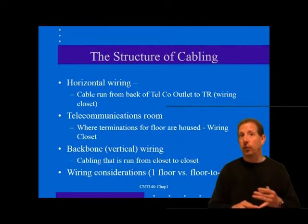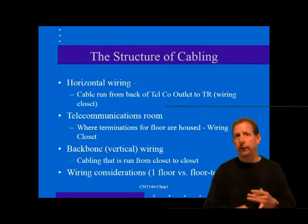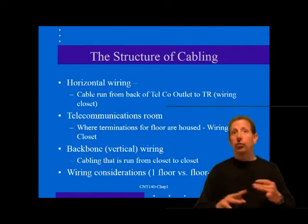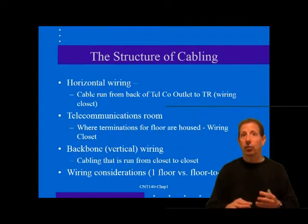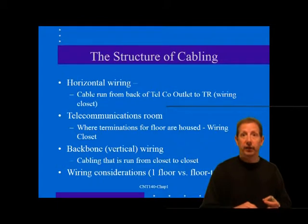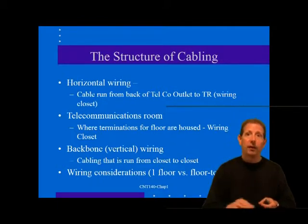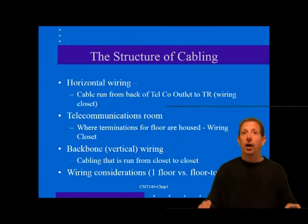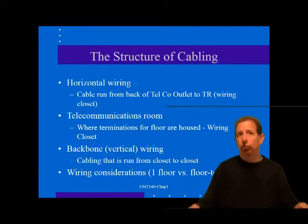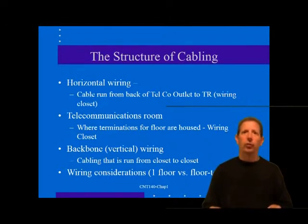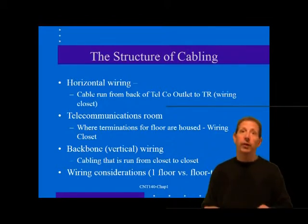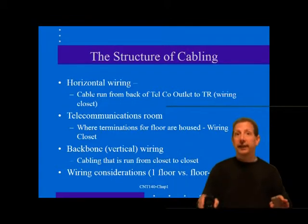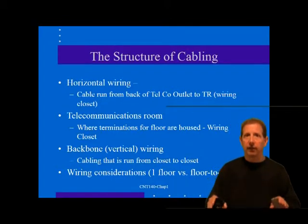Station wire from the wire center to the workstation is called horizontal wiring — a logical name since most of the wire runs horizontally across a single floor, typically in ceiling tiles with small vertical drops down the wall to the outlet. The TR-to-TR cable is called backbone wiring, since it forms a unifying structure between TRs. A very large floor may have more than one TR to adhere to station wire maximums, but the wire between those TRs is still referred to as backbone.